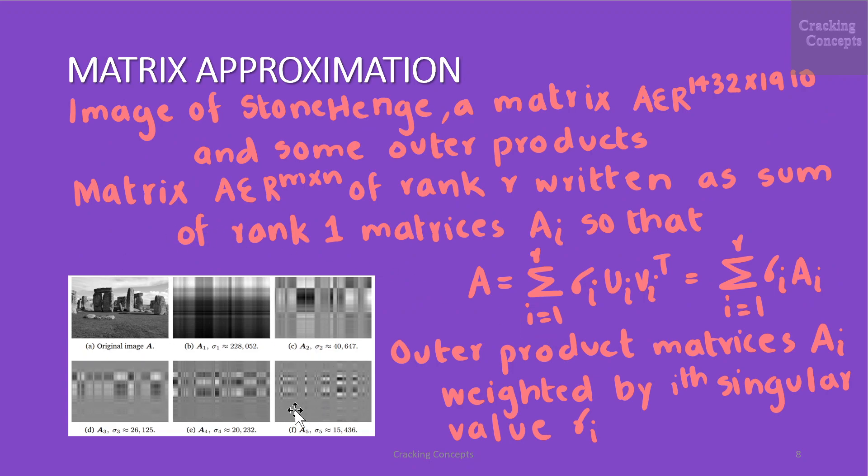These six images are used for image processing with SVD. We have the original image which is a grayscale image that is 1432 by 1910 matrix of values between 0 and 1. All these are rank one matrices A_1 to A_5 and their corresponding singular values σ_1 to σ_5. The grid light structure of each rank one matrix is imposed by the outer product of the left and the right singular vectors.